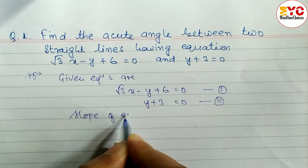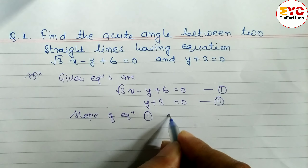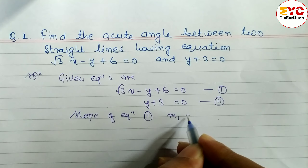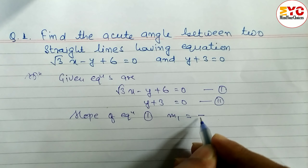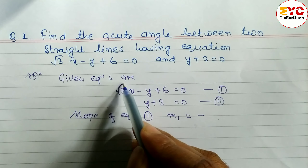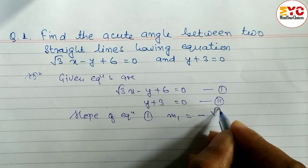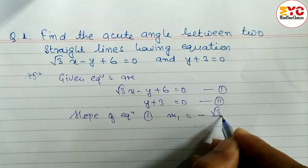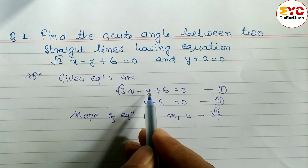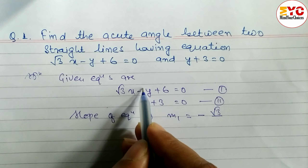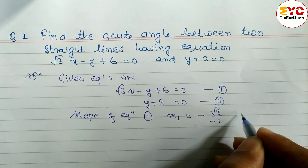Slope of equation 1: let m1 be equal to minus coefficient of x divided by coefficient of y. What is here in front of x? Root 3 — that is the coefficient of x — divided by the coefficient of y. What is the coefficient of y? 1, and we have to take it with its sign, so we write minus 1.